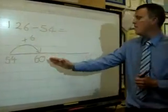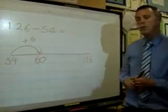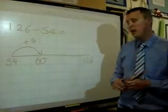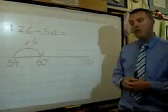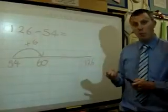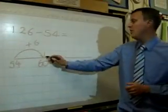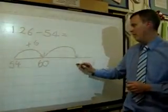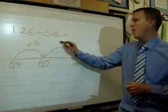So from the number 60 now we still want to move towards the number 126. And in this case I'd encourage the children to target the next 100. So the next 100 is obviously 100 and that would need a jump of 40.